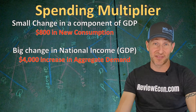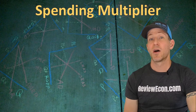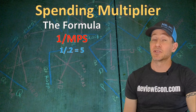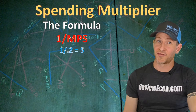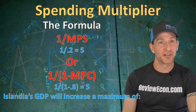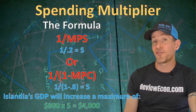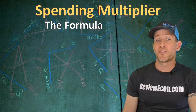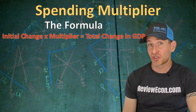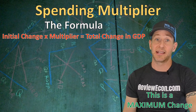It's actually a rightward shift of aggregate demand in the AS-AD model. To find out how much new spending can impact the overall economy, we have a formula: 1 divided by the marginal propensity to save. In Islandia, that was 1 divided by 0.2, which equals 5. You could also find it by taking 1 divided by (1 minus the marginal propensity to consume). Taking the original increase in spending of $800 and multiplying it by the spending multiplier of 5 gives us a $4,000 maximum increase in Islandia's GDP. The formula for the maximum change is the initial change in spending times the multiplier.